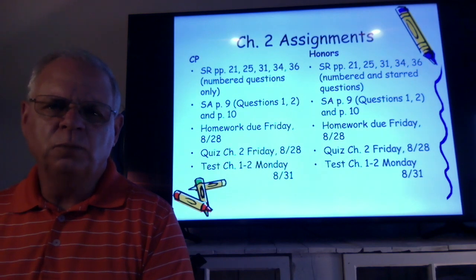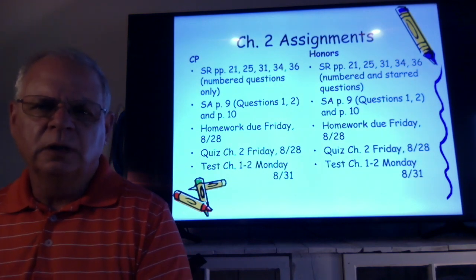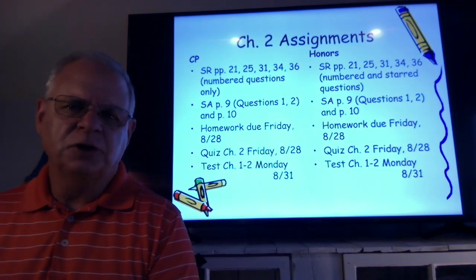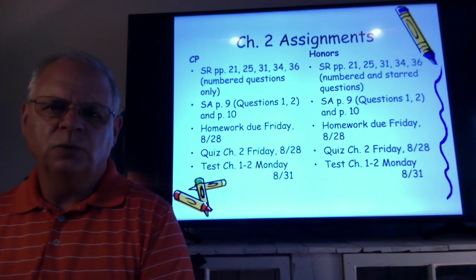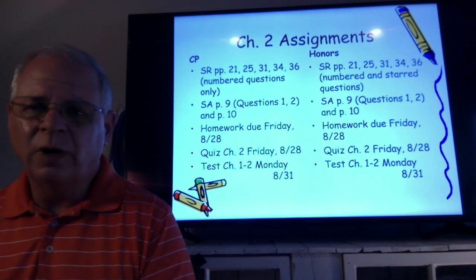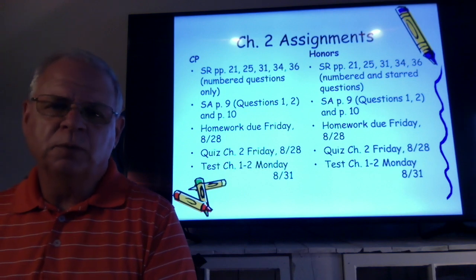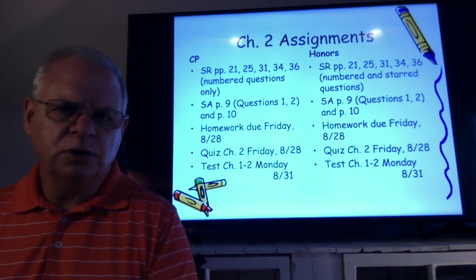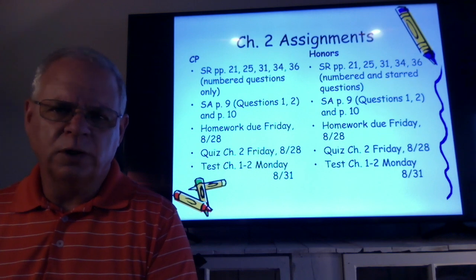Both groups, CP and Honors, will do these section review pages 21, 25, 31, 34, and 36, so you have five of them. Remember, CP, you only do the numbered questions. Honors, you include the starred questions as well.